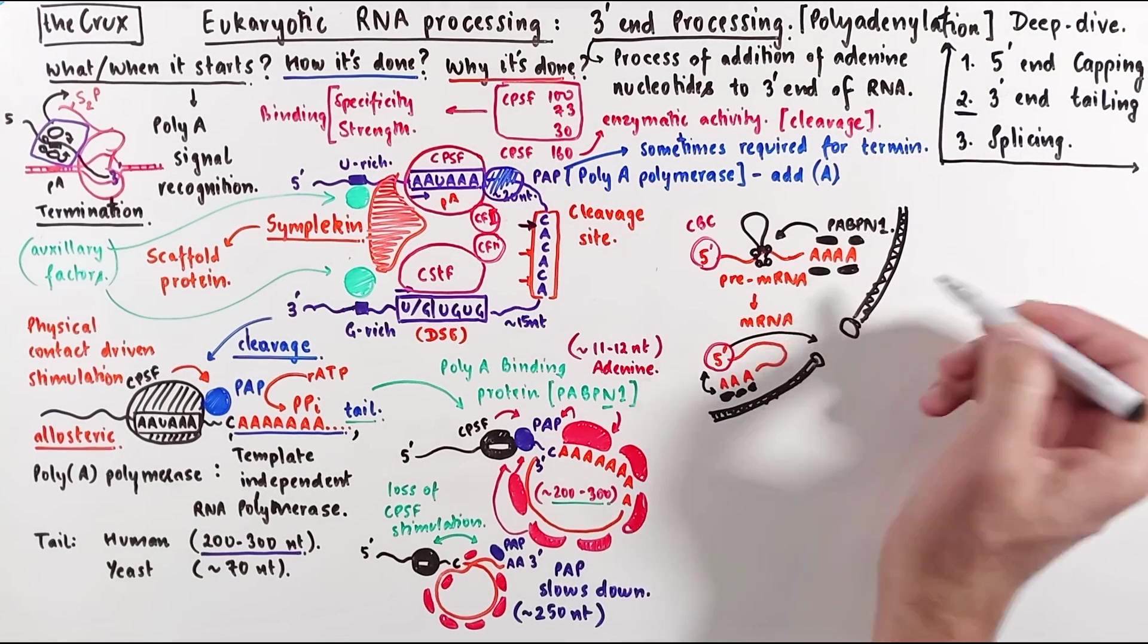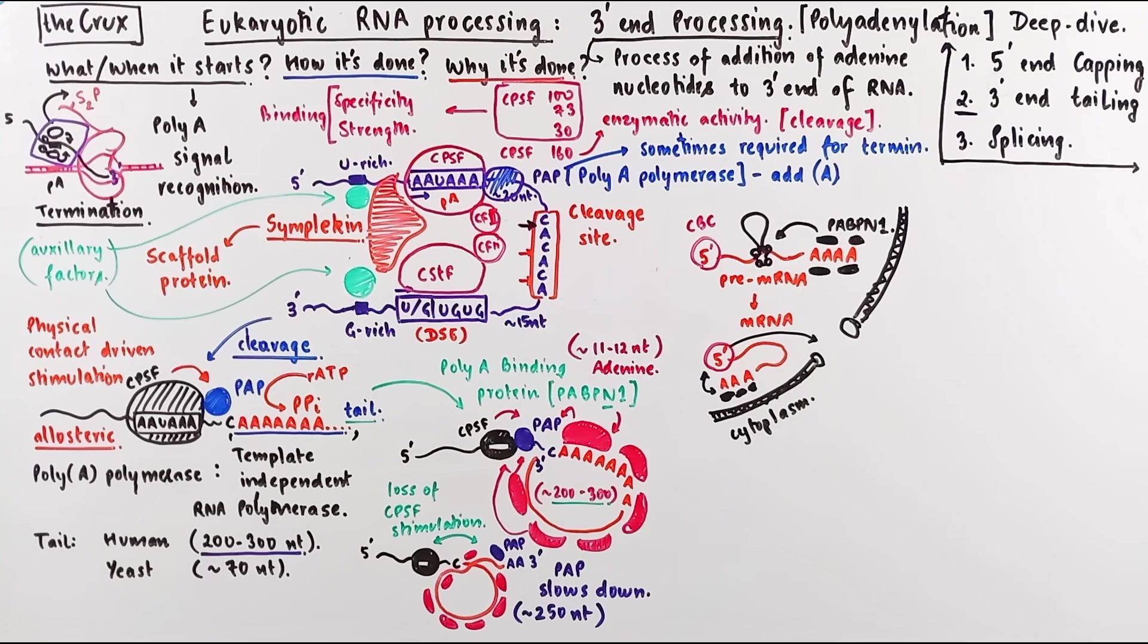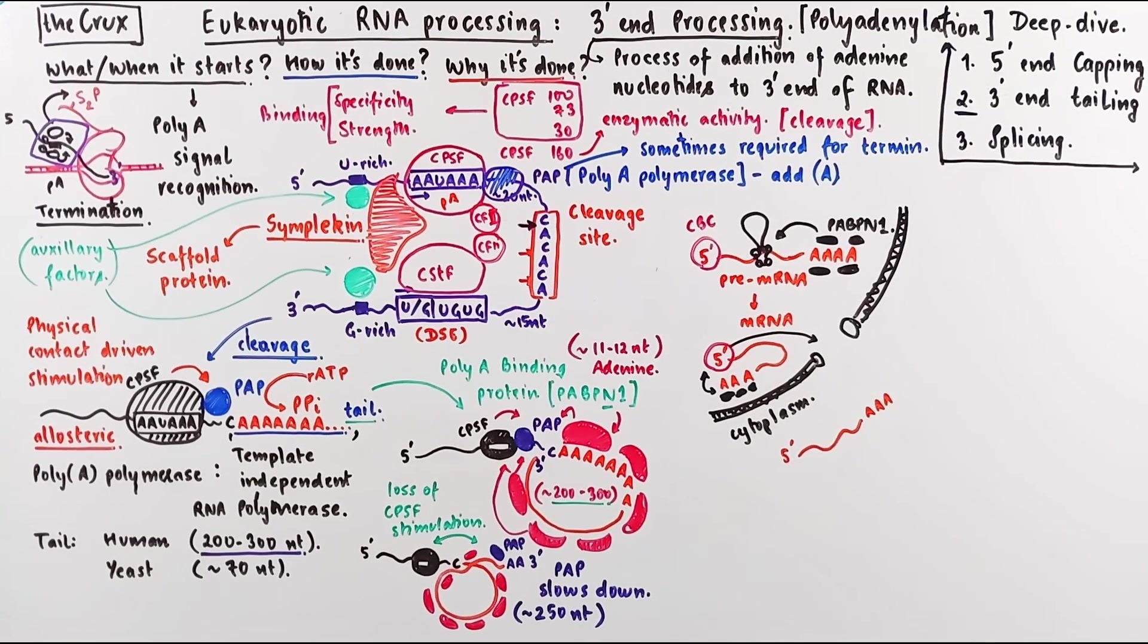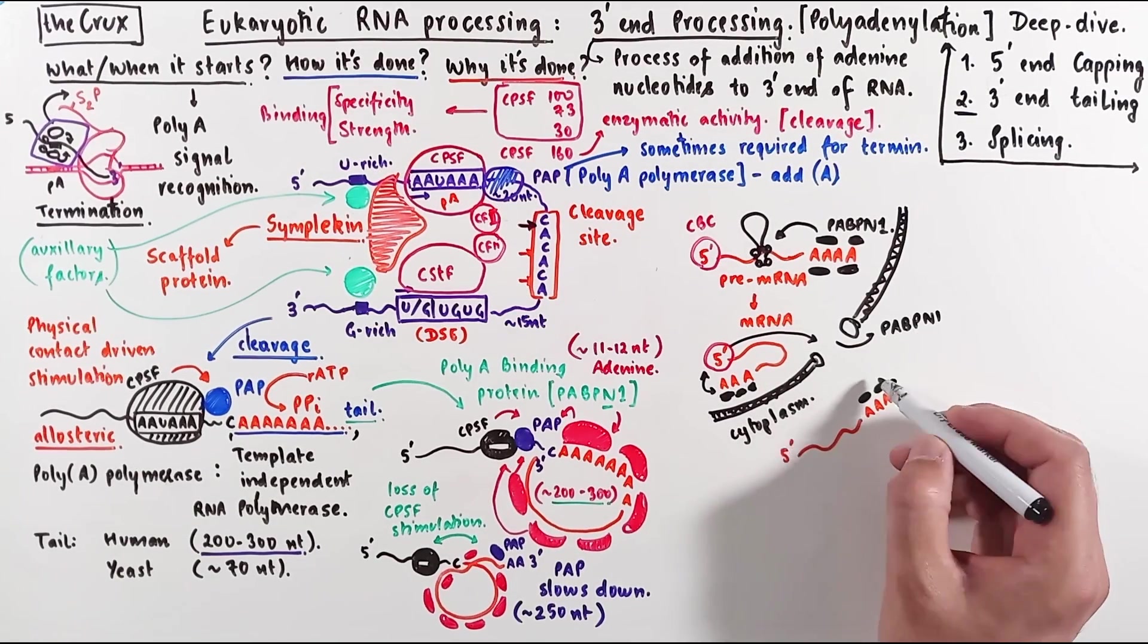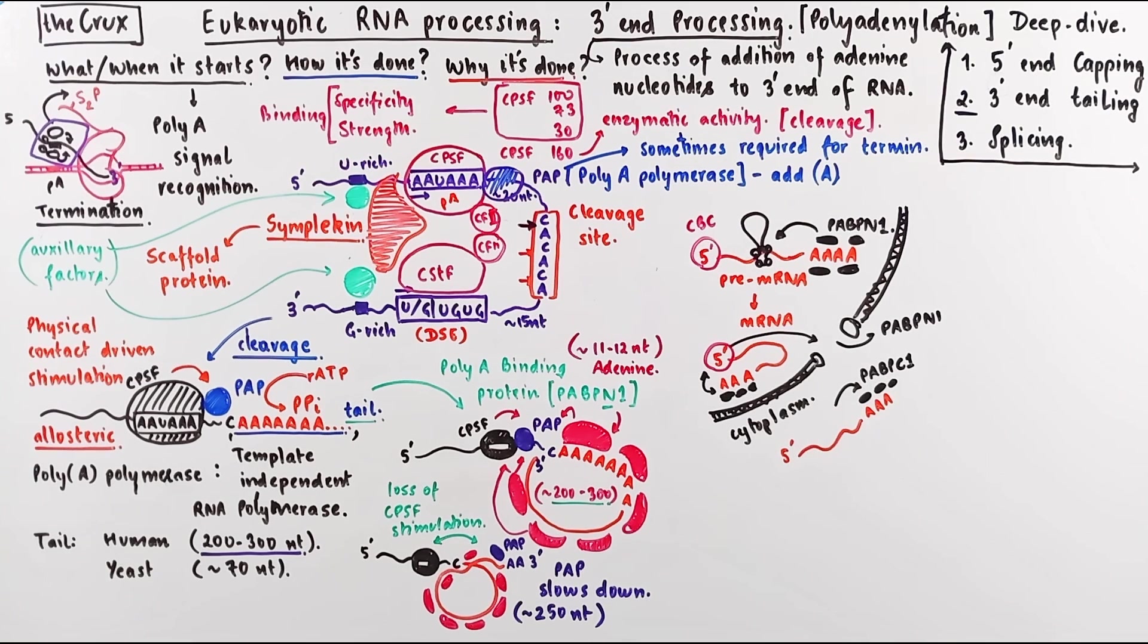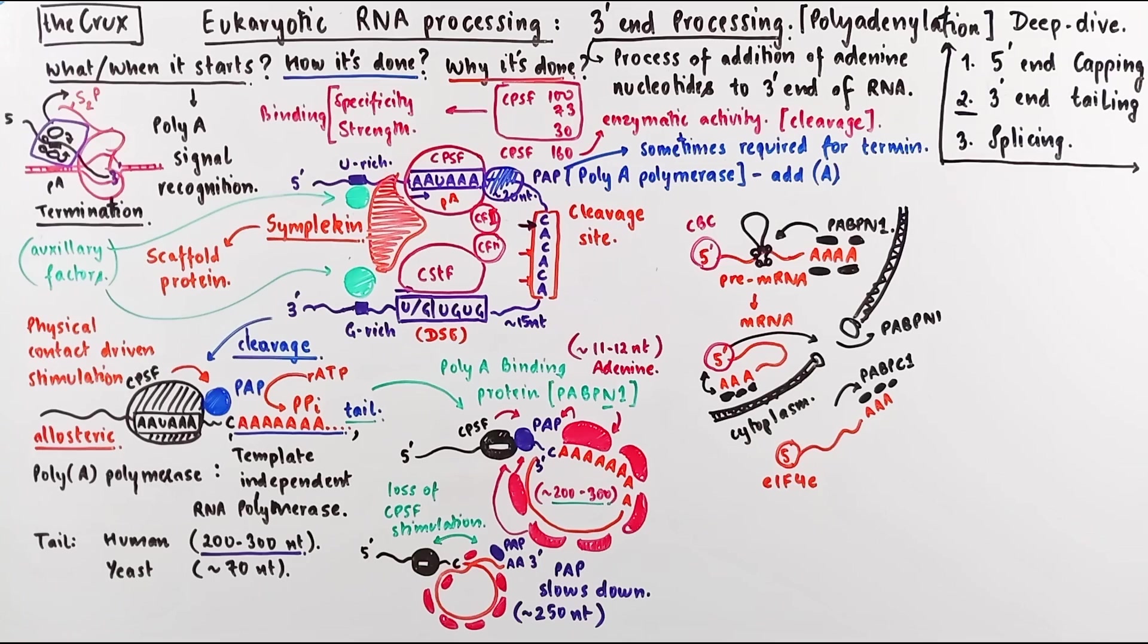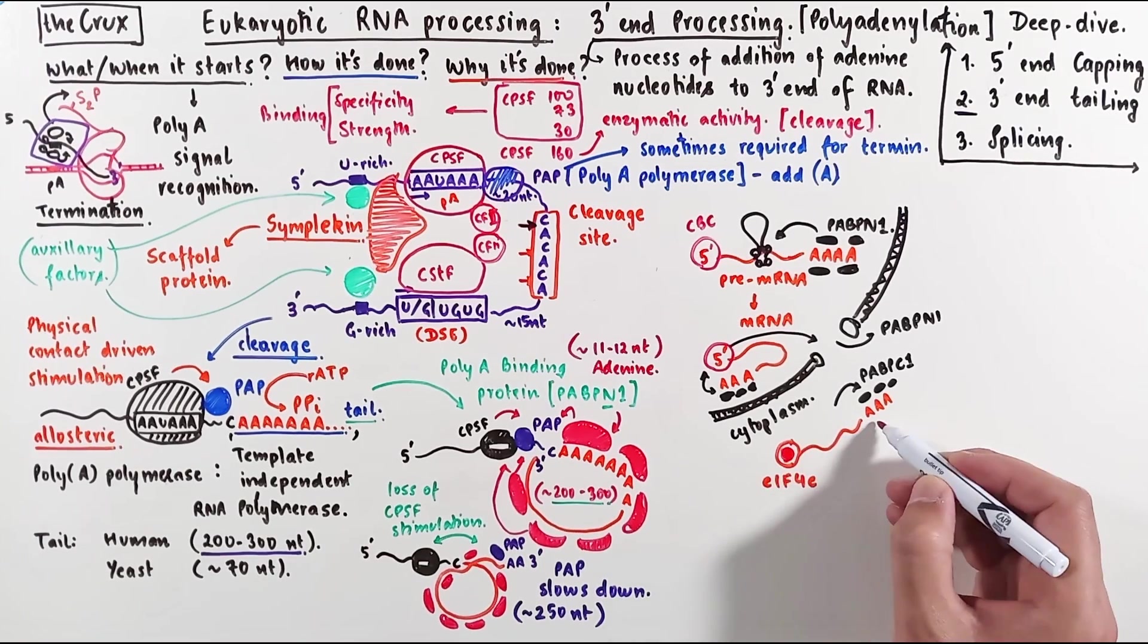When the mRNA reaches cytoplasm, the nuclear version of the polyA binding protein is removed. And the polyA tail in the cytoplasm gets decorated with the cytoplasmic version of the polyA binding protein, which is the PABPC1. The 5' end, if you recall from the 5' RNA capping deep dive video, has the cap binding complex, which gets replaced with the eukaryotic translation initiation factor 4E in the cytoplasm.